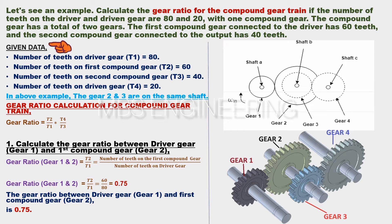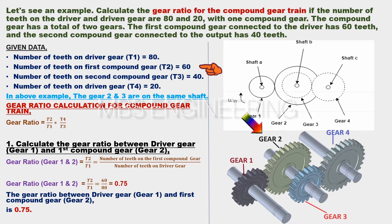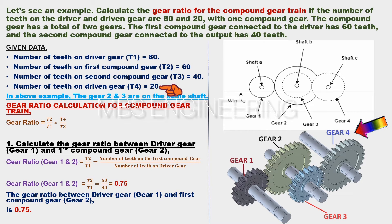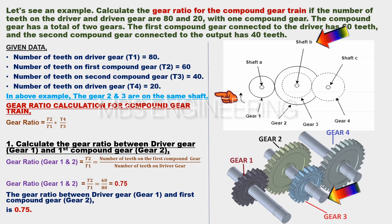Given data: T1 (number of teeth on driver gear) = 80; T2 (number of teeth on the first compound gear) = 60; T3 (number of teeth on the second compound gear) = 40; T4 (number of teeth on driven gear) = 20. In this example, gears 2 and 3 are on the same shaft. Please refer to the image for better understanding.